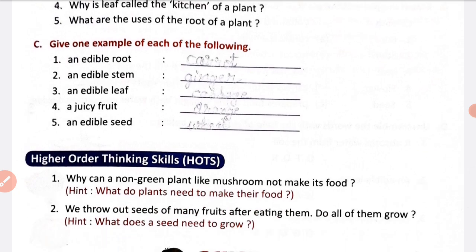Part C: give one example of each of the following. An edible root is carrot. An edible stem is ginger. An edible leaf is cabbage. A juicy fruit is orange. An edible seed is wheat.